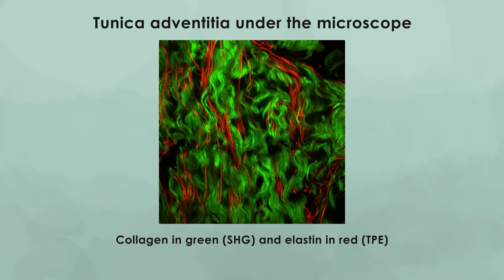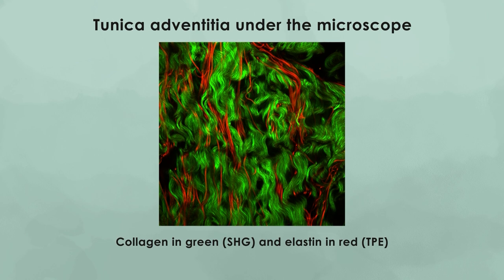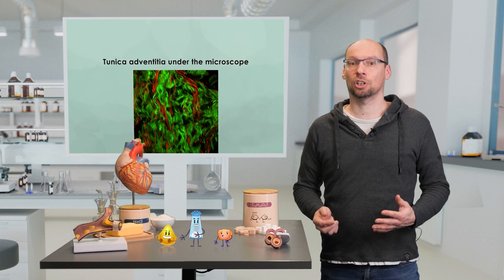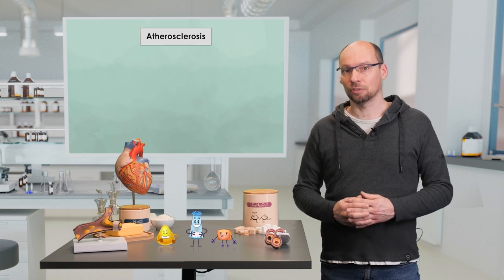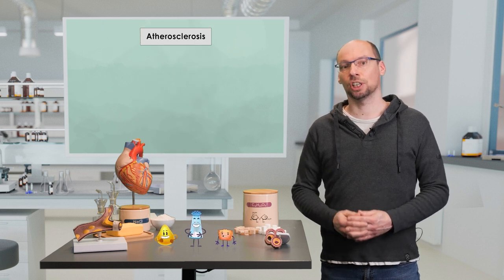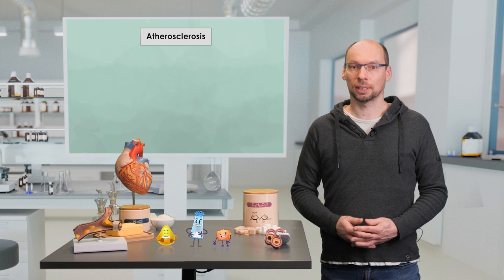The outer layer, adventitia, consists of thick and wavy collagen fibers and is therefore mainly acting as a protecting shield preventing an overstretching of the artery. However, during atherosclerosis, several processes are going on in our arteries which result in a changed structure of the arterial wall.